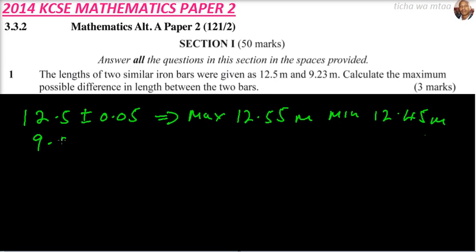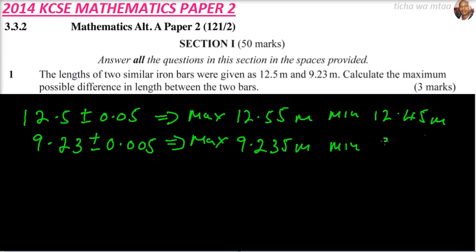Then we have 9.23. You find that the precision here is 0.005 because it has two decimal places. This implies that the maximum of this value is 9.235 meters and the minimum is 9.225 meters. So that is the maximum and the minimum.